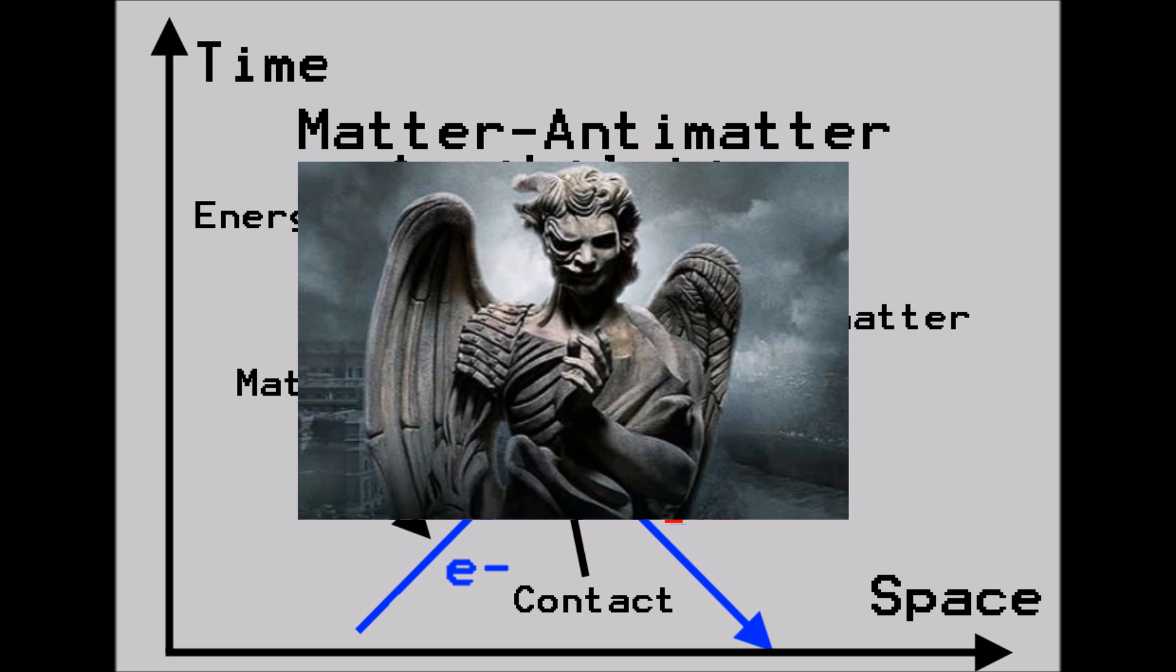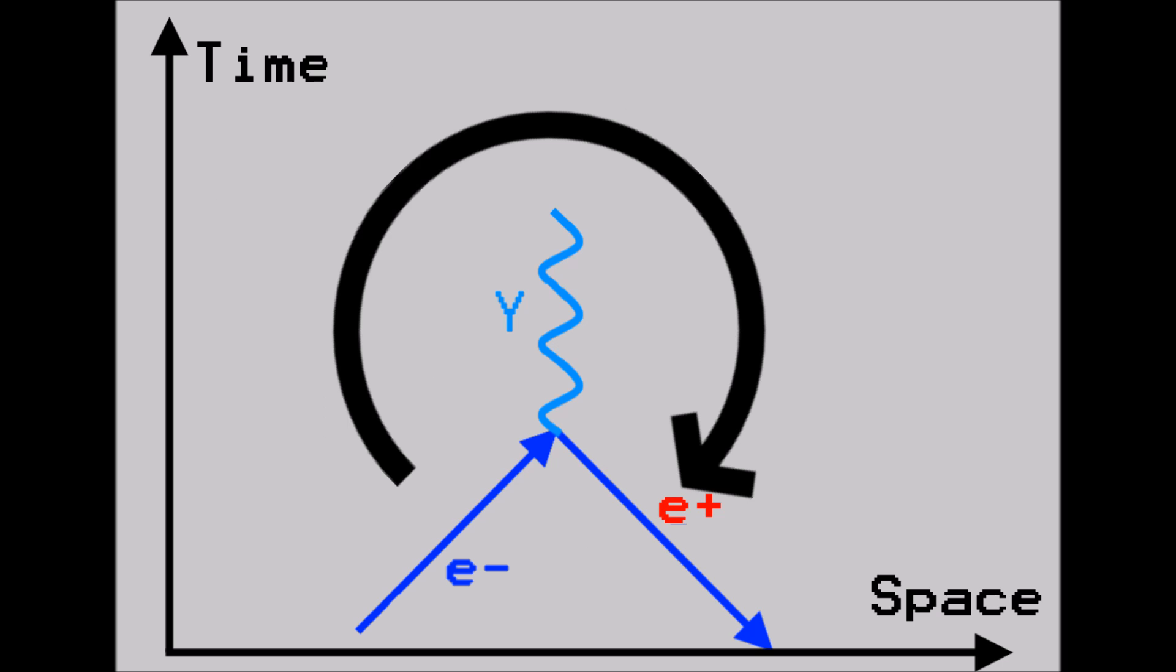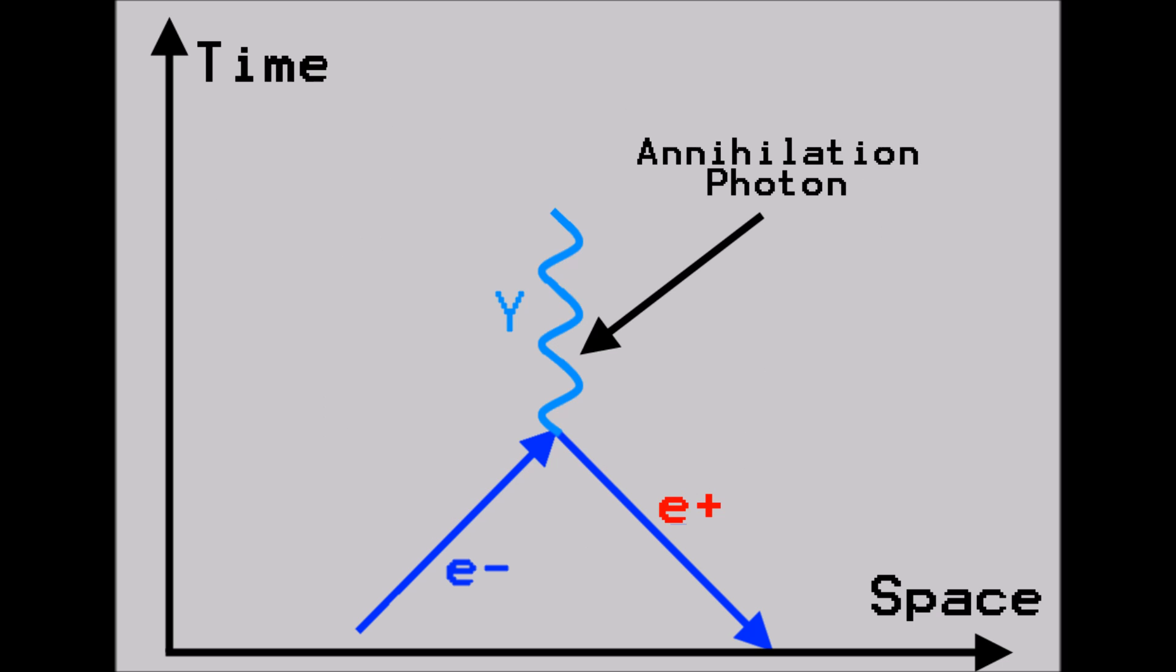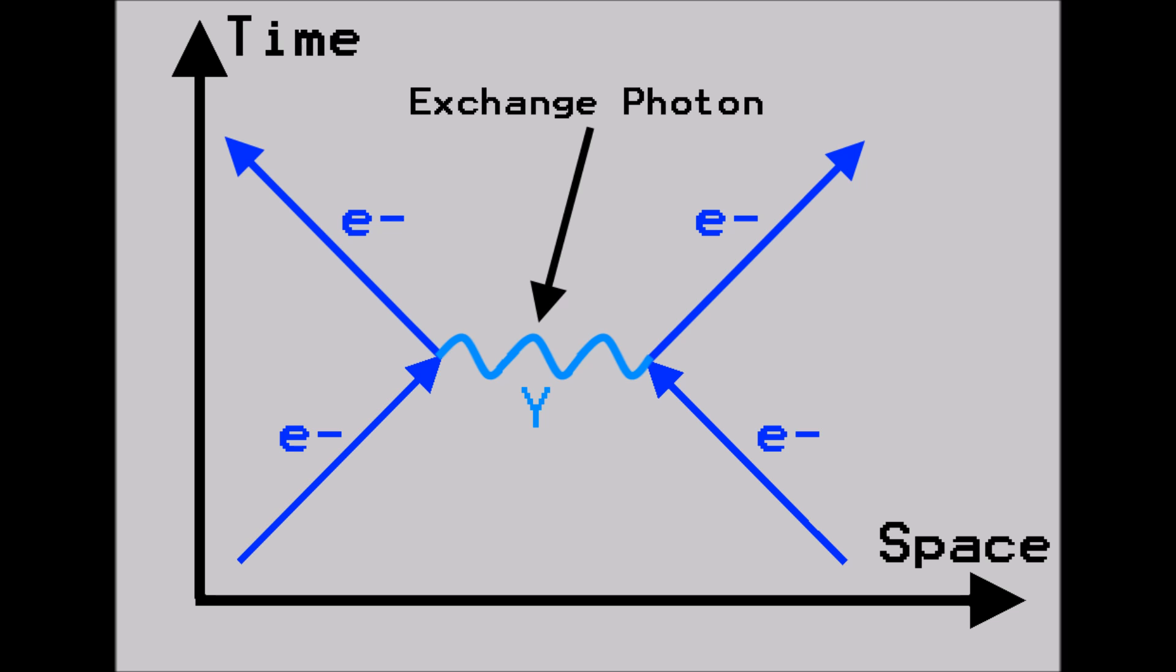Angels and demons fans, please contain your excitement. We can see from this quantum mechanical symmetry law, that the photon produced in the annihilation is just the same as the photon exchanged between the two electrons in the first diagram, but viewed with the space and time axes reversed. Weird.